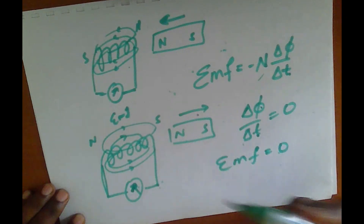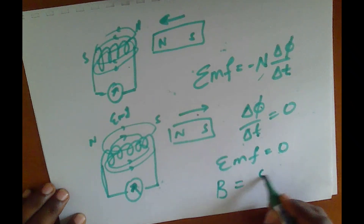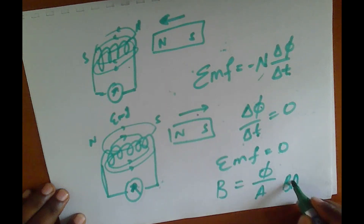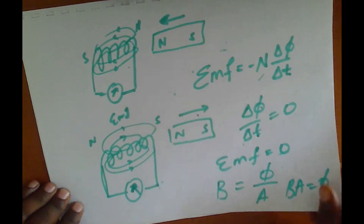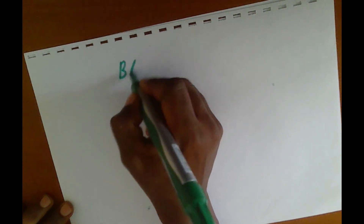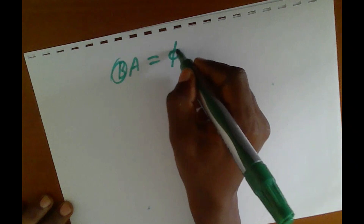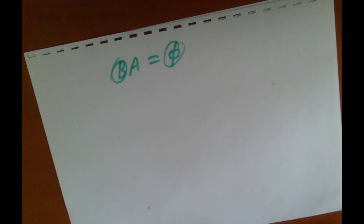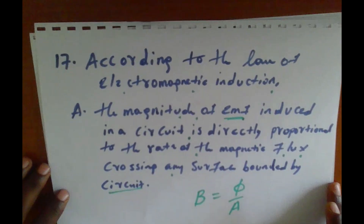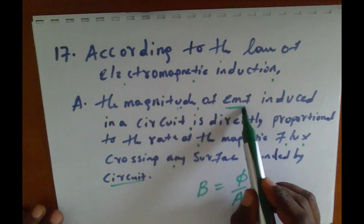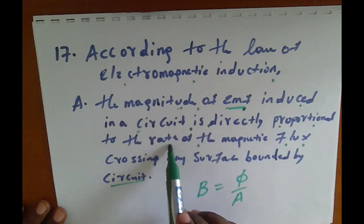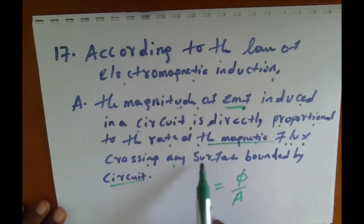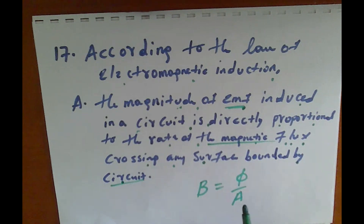If there is a constant magnetic field, since B equals flux divided by area, the flux is also constant. If flux is constant, the rate of change is zero and therefore EMF equals zero. So option A — EMF is directly proportional to the rate of magnetic flux crossing any surface boundary of the circuit — is correct.